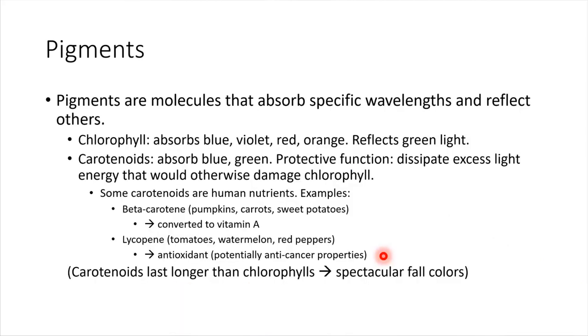Pigments. A couple of examples of pigments. Chlorophyll. This is the molecule that reflects green light. Most plants have quite a bit of chlorophyll. Most plants are good at absorbing these other colors, blue, violet, red, and orange. Most plants reflect green light.